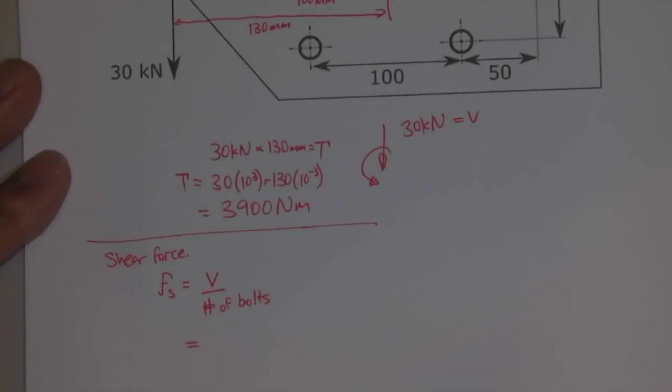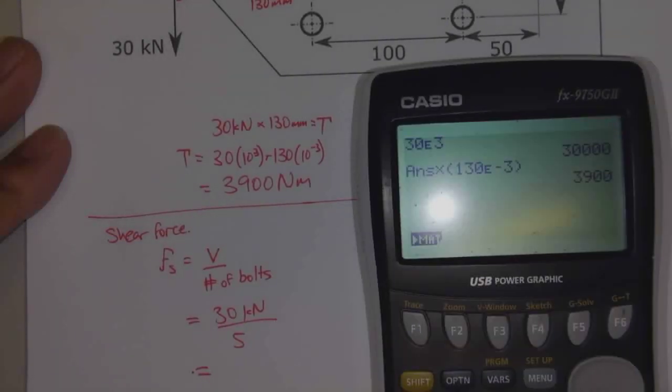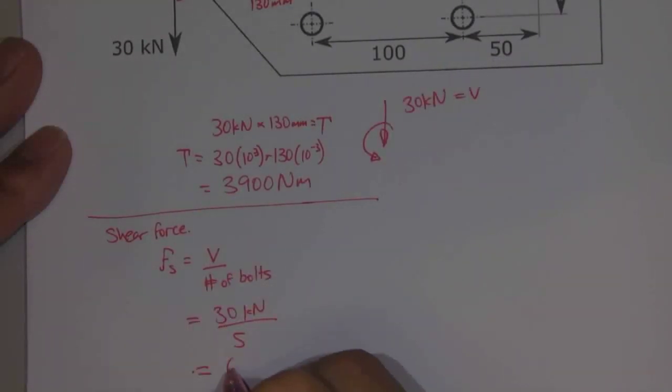Alright, so for this we get V which is 30 kilonewtons divided by the number of bolts which is 5, so the force per bolt equals 30 divided by 5 which is 6 kilonewtons.